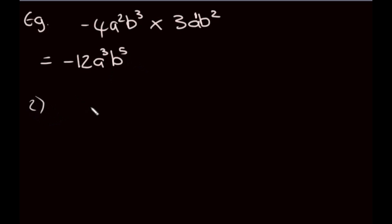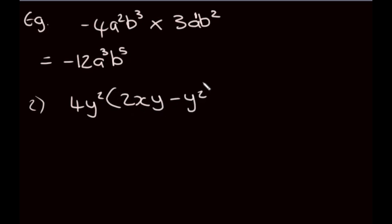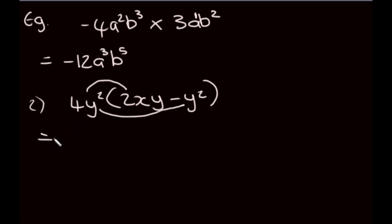Another example: we're given 4y squared, open brackets, times 2xy minus y squared. It's basically going to be the same thing — we're multiplying 4y squared into the first term and then into the second term. So first we do 4y squared times 2xy.